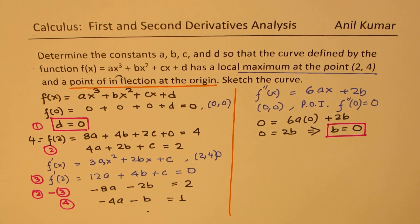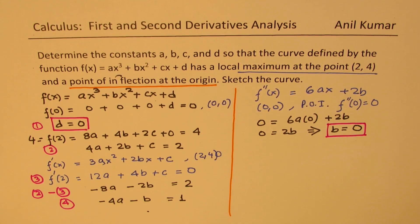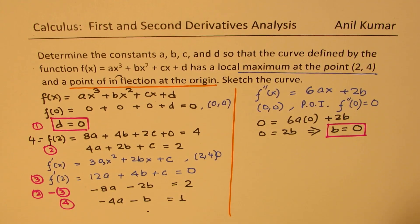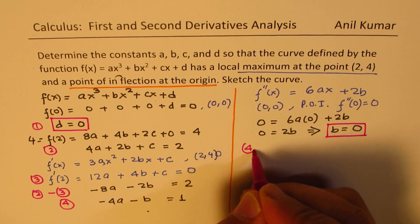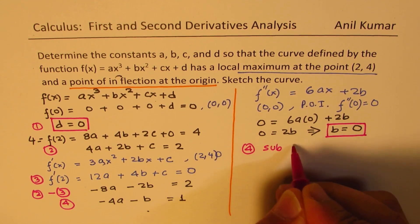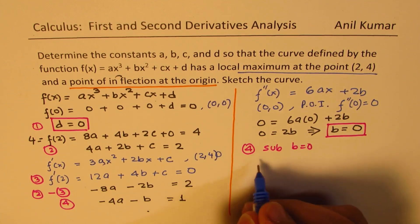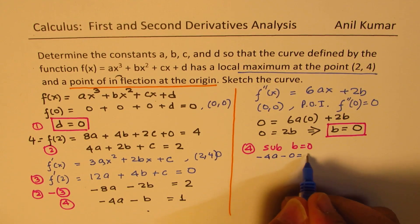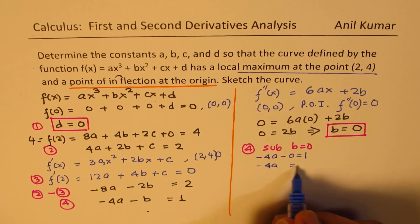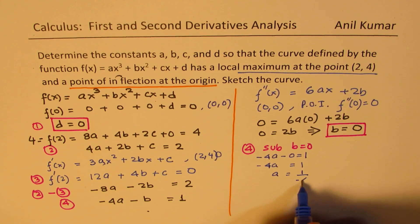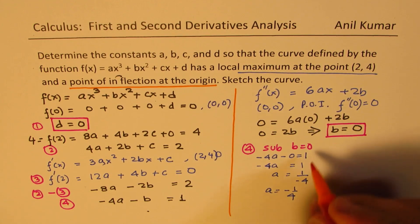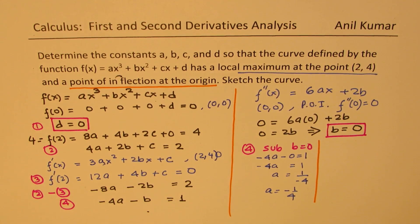Now we can find a and c. So we know b is 0, we know d is 0, and we have this relation 4. So in 4, will sub b = 0. So what do we get? We get -4a - 0 = 1. And that gives you that -4a = 1, or a = 1/(-4), or a = -1/4. So we get the value of a as -1/4.